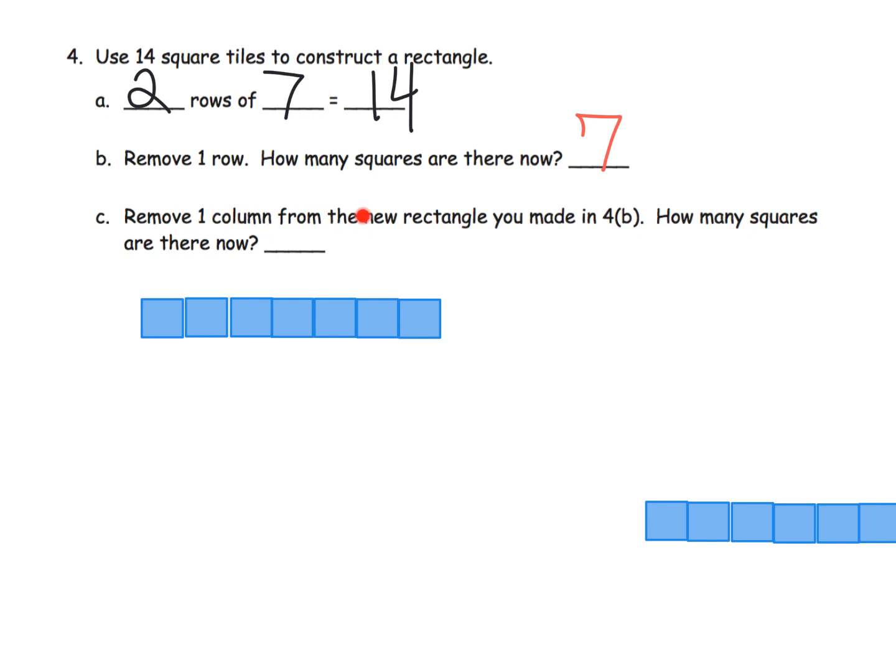Then it says, remove one column from this new rectangle. And I'll take away this column right here. I'll take that guy away. Boom. Took him away. Now the question is, how many squares are there now? And we can see that there's one, two, three, four, five, six. So we can see that there's now six squares.